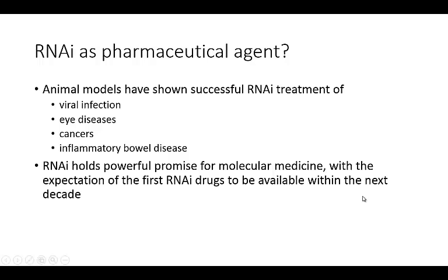Researchers have been looking at possibly using RNA interference as a pharmaceutical agent. If you can turn off every single copy of a particular gene in a cell, that could be a quite powerful tool. They've actually used animal models to show successful RNAi treatment for things like viral infection, several eye diseases, cancers potentially, and inflammatory bowel disease. It's a really powerful technique, and they are hoping to make these first drugs available within the next decade.